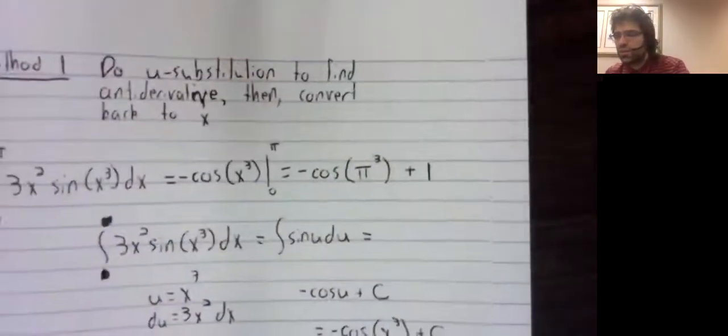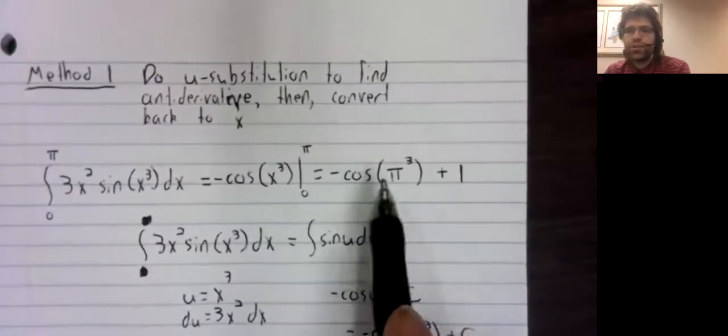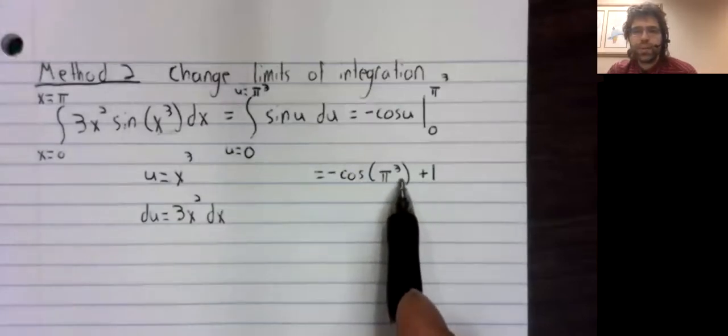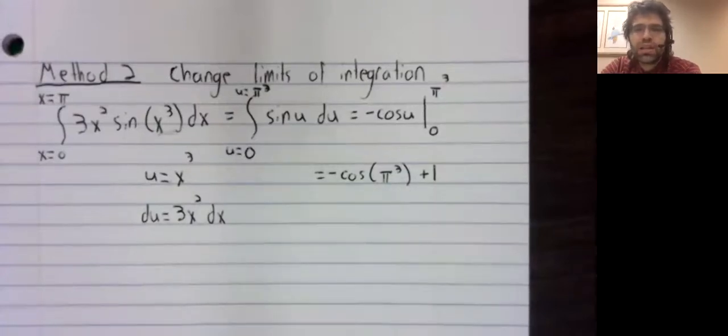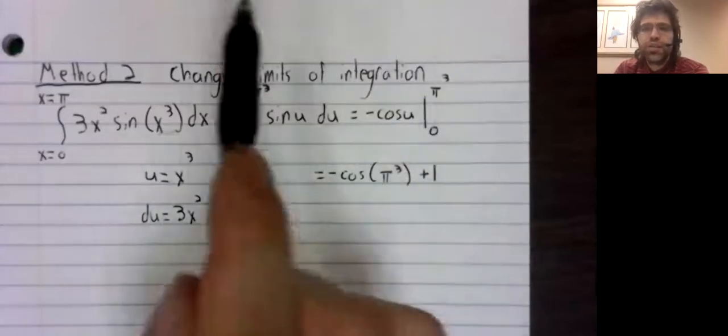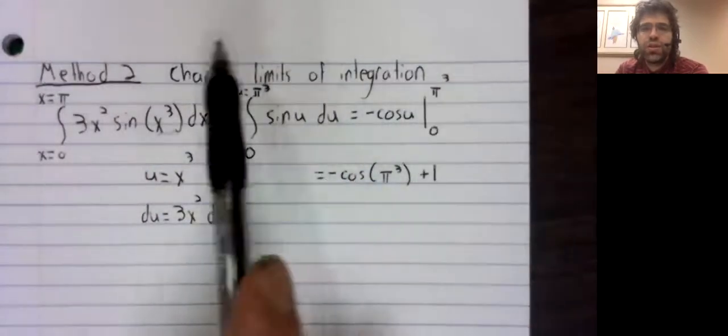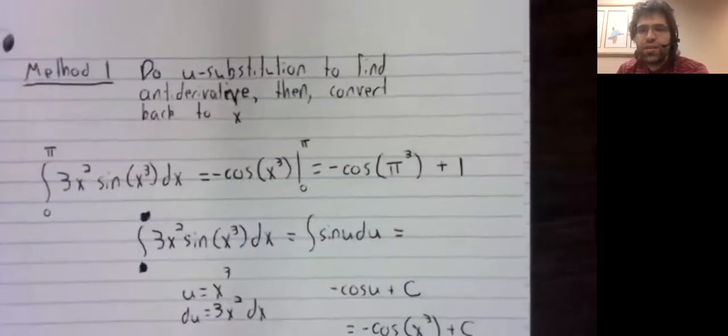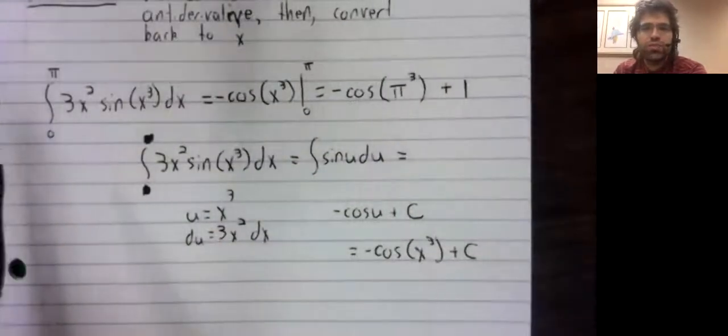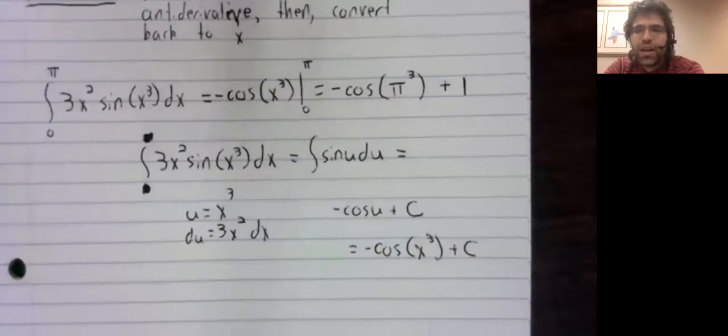And of course, whichever method we use, if they're both valid ways of approaching the problem, we'd better get the same answer. Which indeed we do. It's my experience that calculus textbooks really try to get their students to do this, but that students very much prefer to approach these problems this way. I'm not going to push you in one direction or the other. Whatever you get the correct answer, whichever of these two ways of thinking you employ.